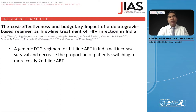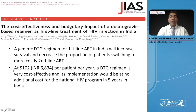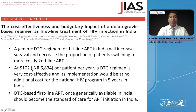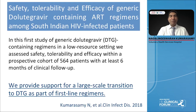Coming to cost — when dolutegravir was launched it was prohibitively expensive compared to efavirenz. Our group conducted cost-effectiveness studies using a CEPAC model in collaboration with Harvard University, showing that a generic dolutegravir regimen for first line in India would increase survival and decrease the proportion of patients switching to more costly second-line ART. At that time we modeled that $102 per year per patient would be very cost-effective; today the cost is around $70 per year. We now have generic dolutegravir available for the last four to five years, and we have shown safety, tolerability, and efficacy of generic dolutegravir is comparable with the innovator product, supporting large-scale transition to dolutegravir as first-line therapy.